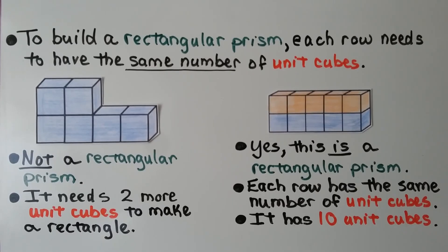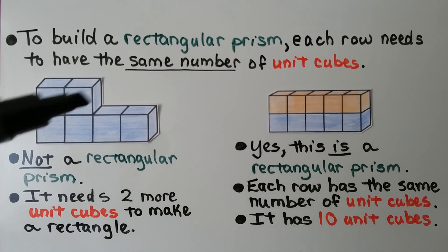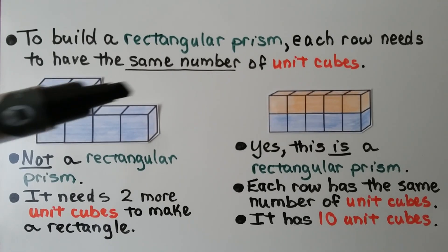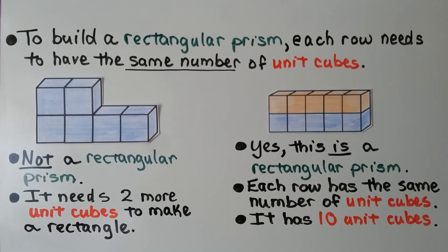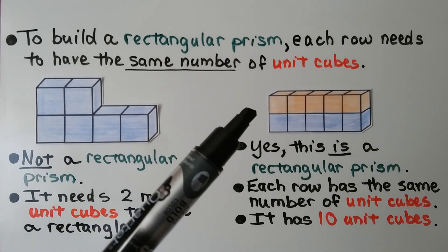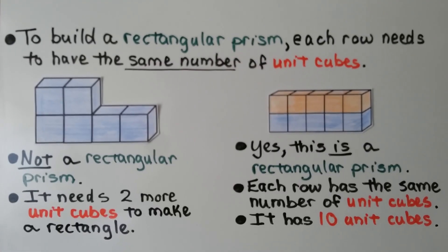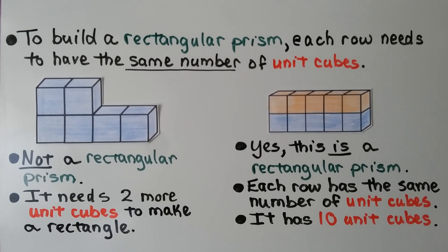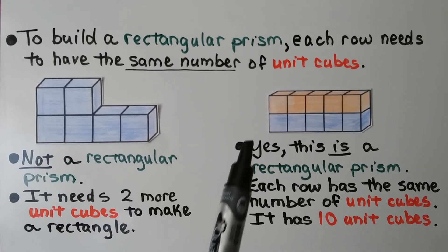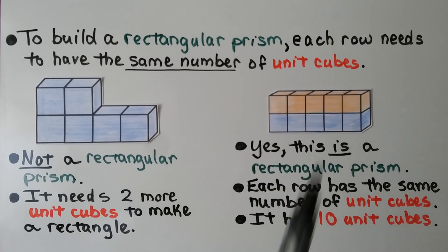To build a rectangular prism, each row needs to have the same number of unit cubes. So this arrangement is not a rectangular prism — it needs two more unit cubes up here to make a rectangle. This one is a rectangular prism: each row has the same number of unit cubes. It has ten unit cubes — five on the bottom and five on top.